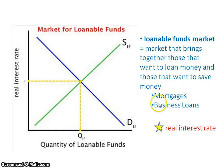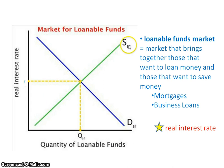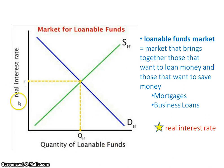When we talk about the market for loanable funds, you have a downward-sloping demand for loanable funds and an upward-sloping supply of loanable funds. On the horizontal axis we have the quantity of loanable funds, and on the vertical axis we have R, which stands for the real interest rate.